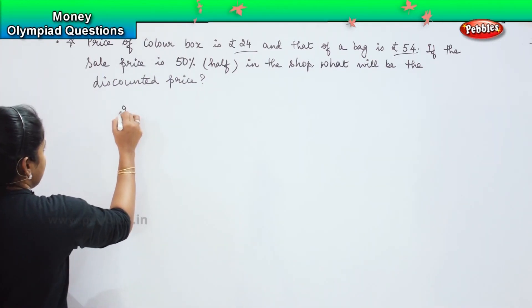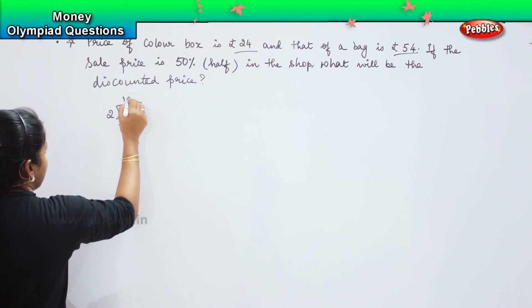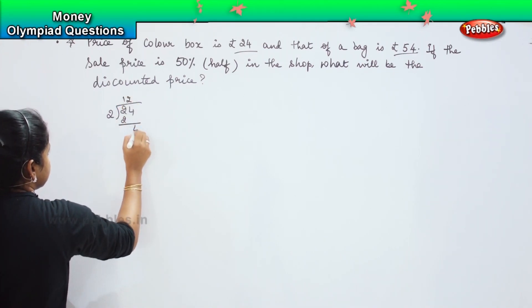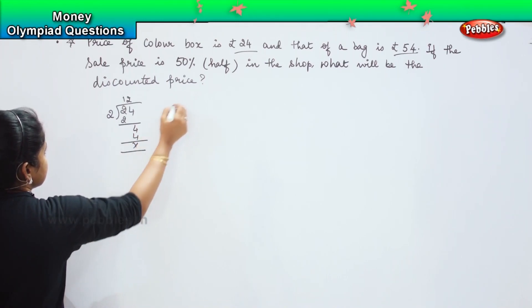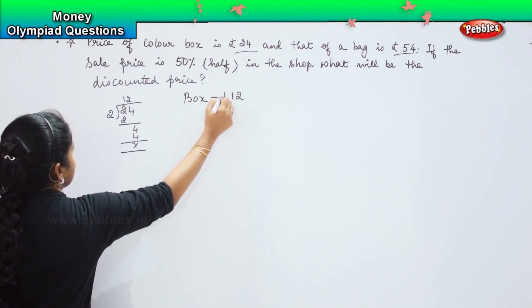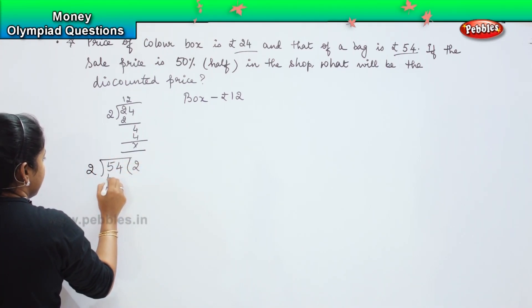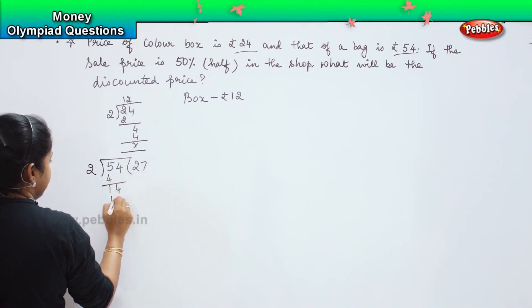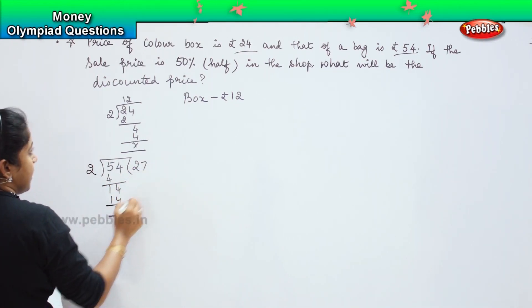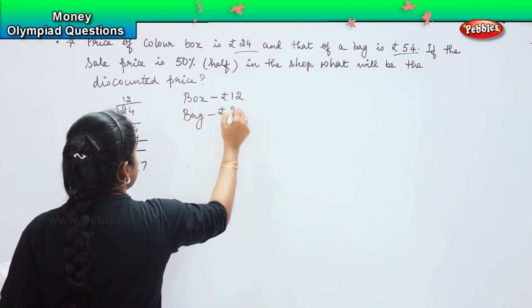So the first one is 24 rupees. It is half, half means you need to divide it by 2. So 12 ones, 2 ones are 2, 2 twos are 4. So the value of box will be 12 rupees. Now the next comes in the bag. So 54 divided by 2, 2 twos are 4, 14, 2 sevens are 14. So the value of the bag is 27 rupees now.